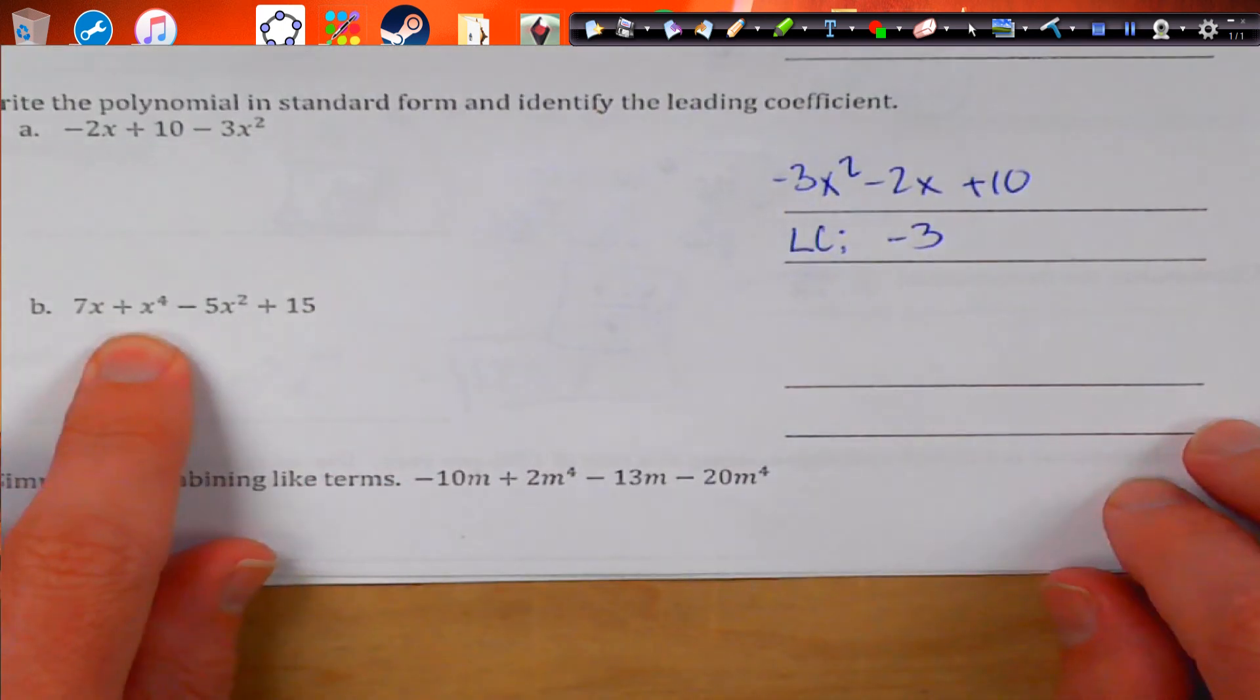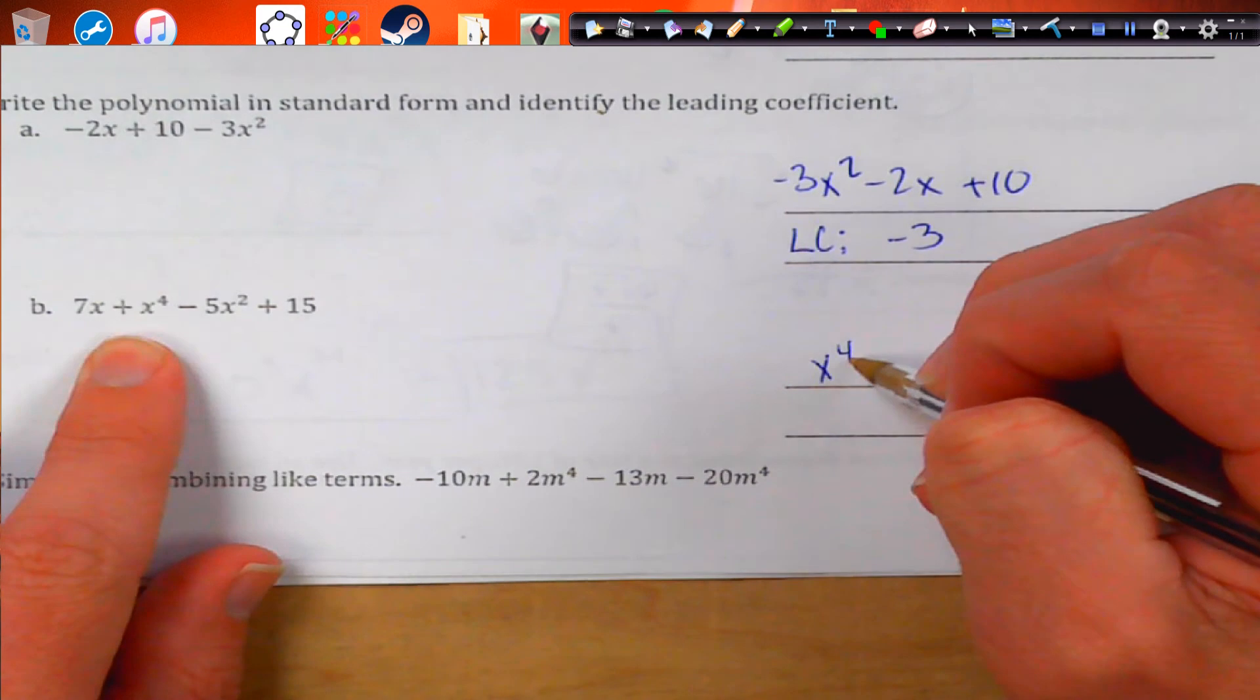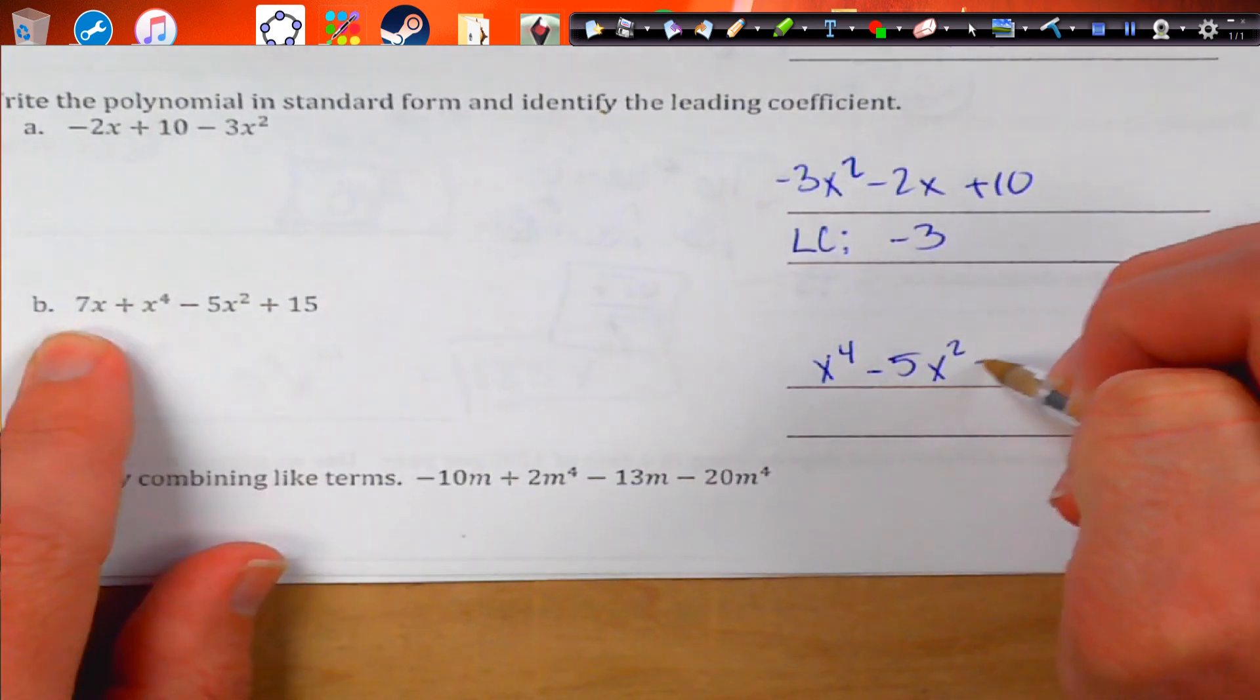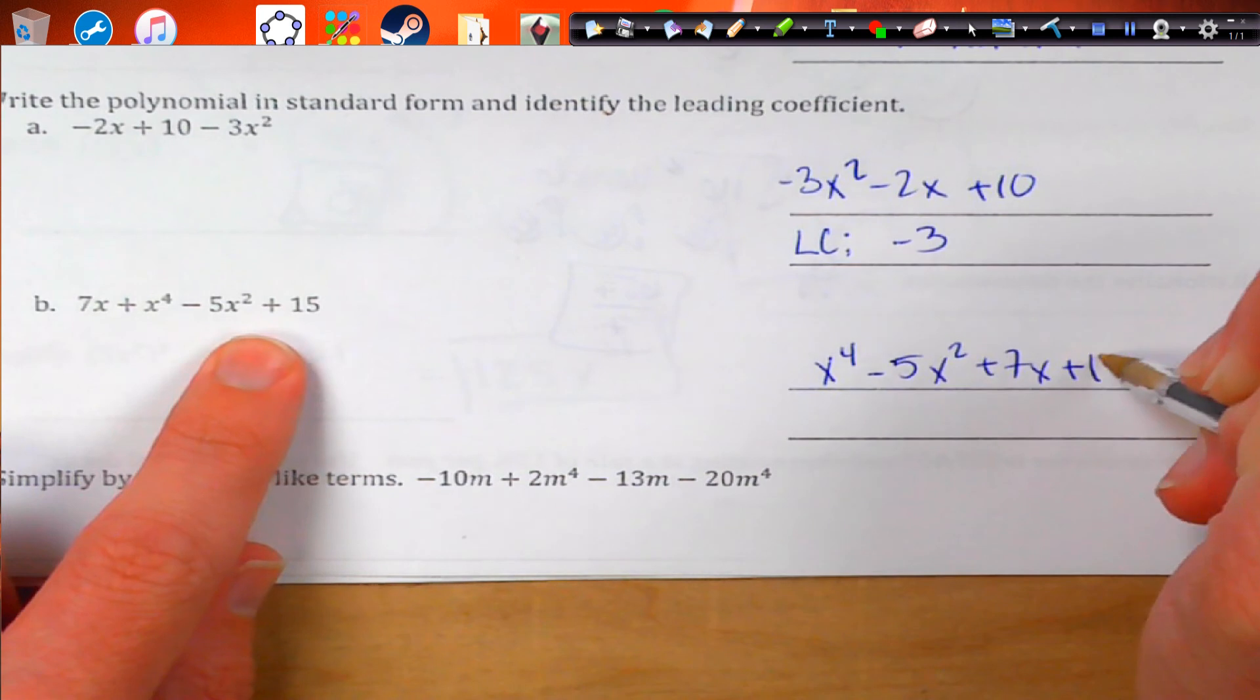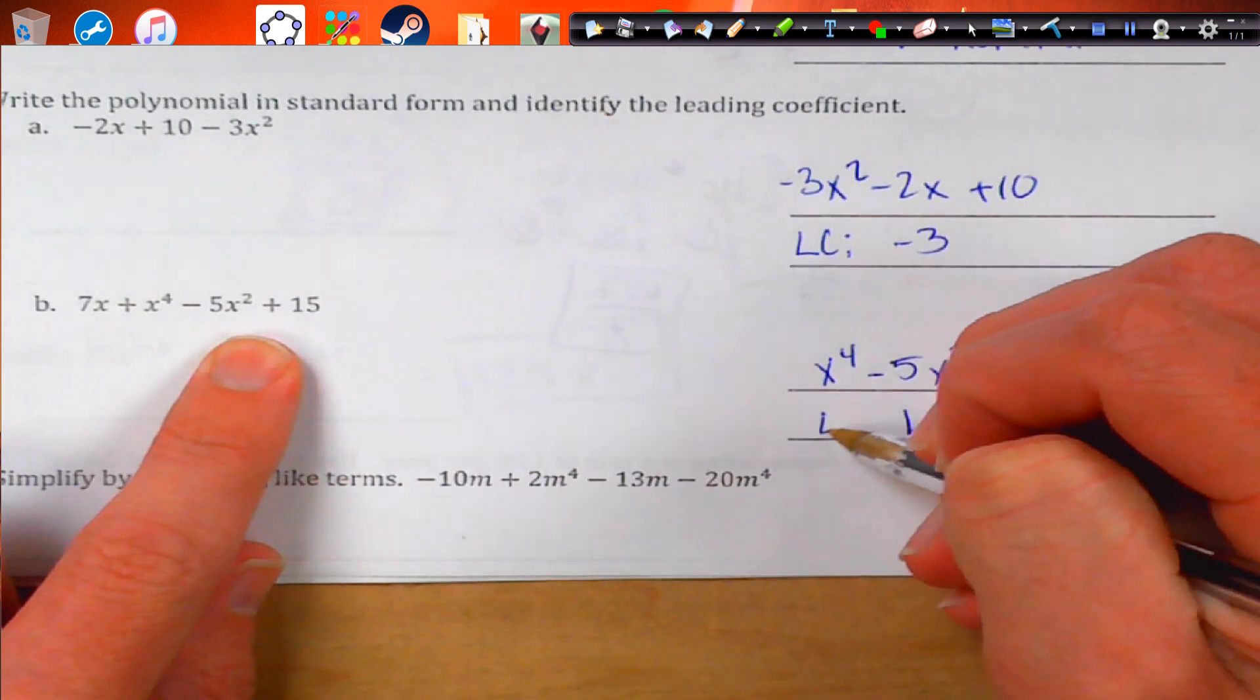Next, we have x to the 4th as our largest. And then we're going to go negative 5x squared plus 7x plus 15. And we have 1 as our leading coefficient.